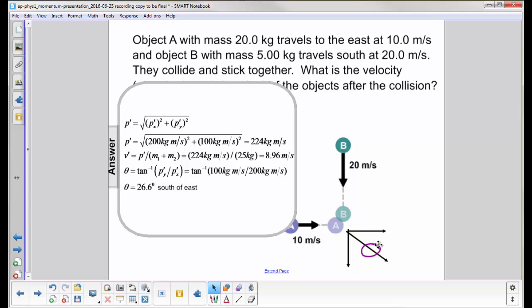The total momentum is going to be the square root of the momentum in the X direction, the final momentum in the X direction, and the final momentum in the Y direction. So what I have here, the X direction is going to be 20 times 10. There's 200. And you square that.